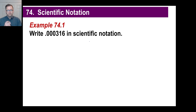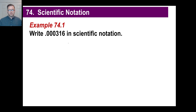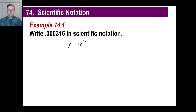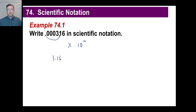So copy this down: 0.000316 — write that in scientific notation. This is a very small number. Well, we know that x times 10 to the whatever is the way we want it to look. This x is supposed to be between 1 and 10, including 1. So we're going to have to move this decimal to a point where our new number is between 1 and 10. You can do 0.3, 3.16, 31.6, 316 — and your answer is you're going to move it right to 3.16, because 3.16 is the only position where the first part is between 1 and 10.